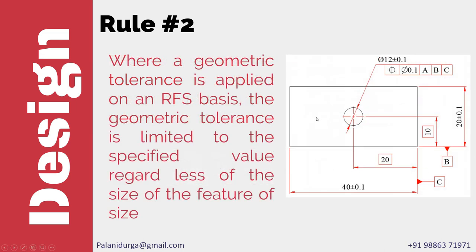Here is an example: we have a feature of size and a positional tolerance. For this positional tolerance, the value of diameter 0.1 remains constant. In most general engineering applications like jigs, fixtures, gauges, machine tools, and machineries, we require tighter tolerance, and in all such cases we go with regardless of feature of size.